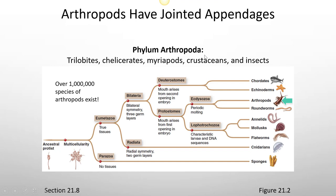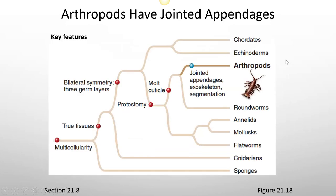The phylum Arthropoda includes trilobites, chelicerates, myriapods, crustaceans, and insects. Characteristics of arthropods are that they have jointed appendages, an exoskeleton, and segmentation.